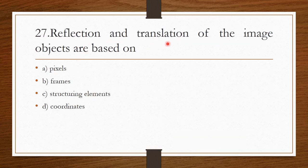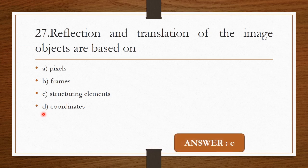Question 26: Reflection and translation of image objects are based on — Option A: Pixels. Option B: Frames. Option C: Structuring elements. Option D: Coordinates. The correct answer is Option C — Structuring elements.